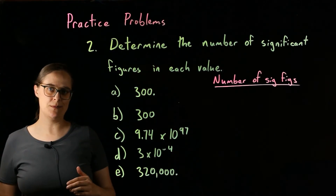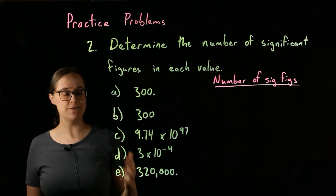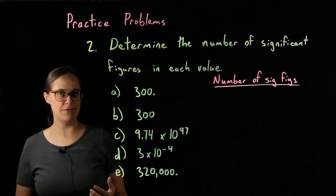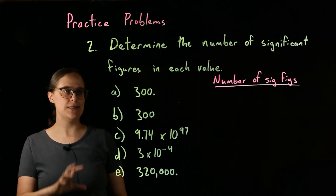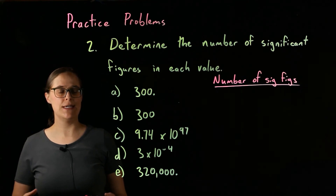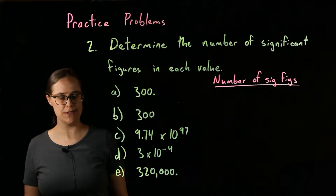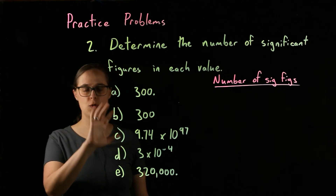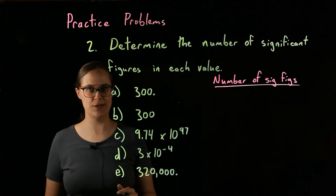So the goal of the practice problems is to determine the number of significant figures in each value. We first need to identify which digits are significant, and then for each value we count the total. This will be important later when you calculate values and need to round to the proper number of significant figures.